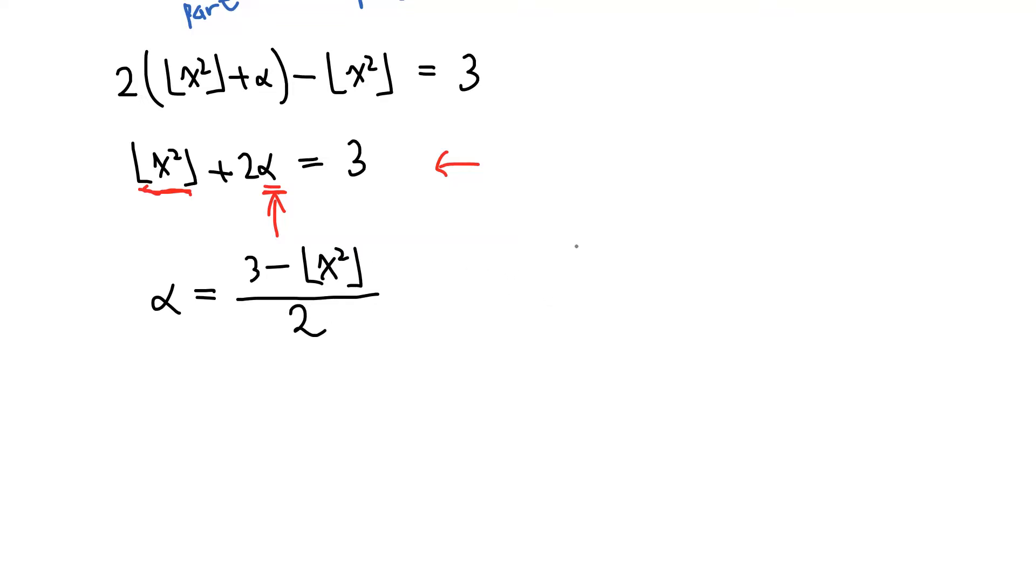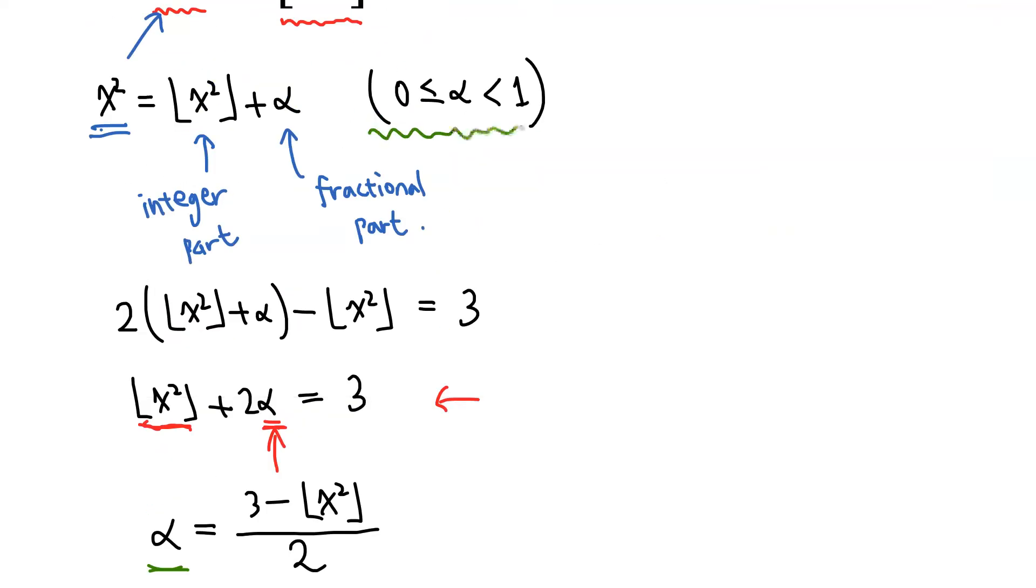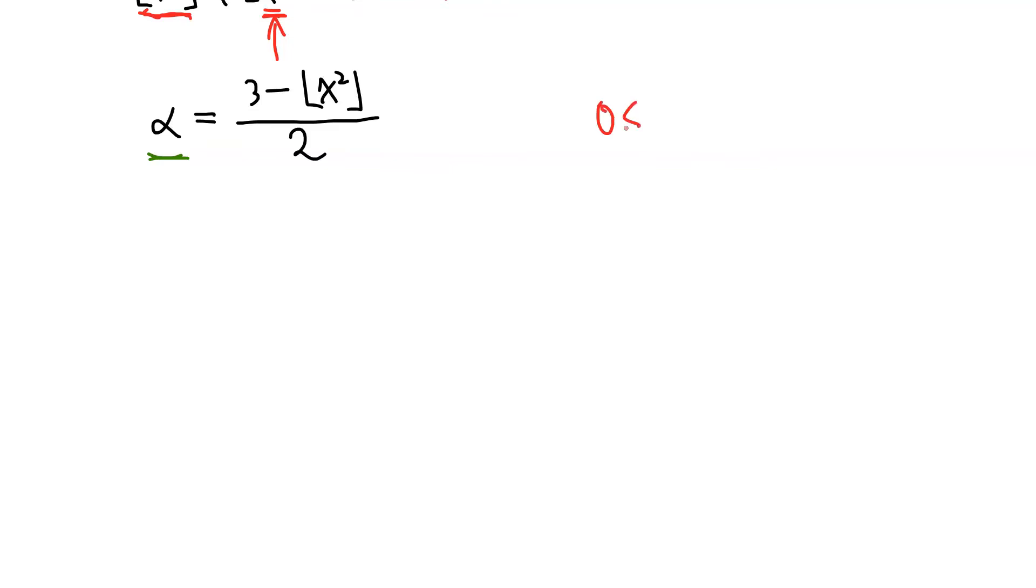The reason that I solved for alpha instead of floor x squared is that alpha has its own inequality. This inequality is essentially the condition for the fractional part, and therefore we have 0 less than or equal to 3 minus floor x squared over 2 less than 1.